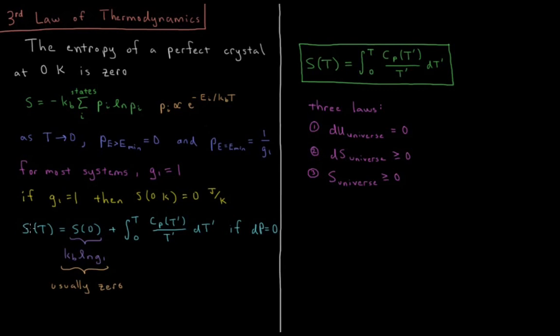Then we have, using this equation here, where the entropy at 0 Kelvin is the Boltzmann constant times the degeneracy of the ground state, which is usually 0.